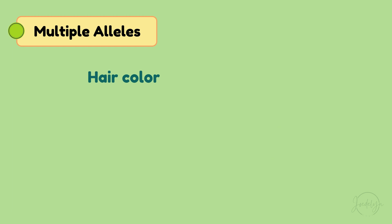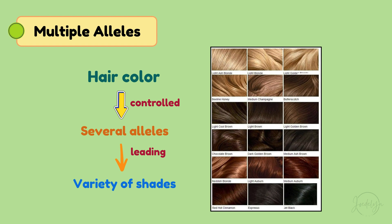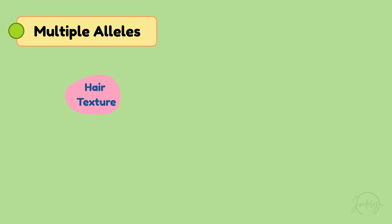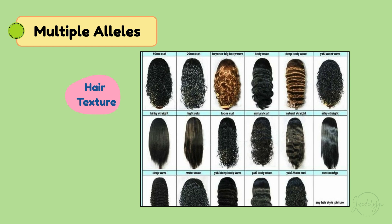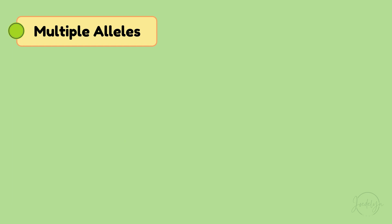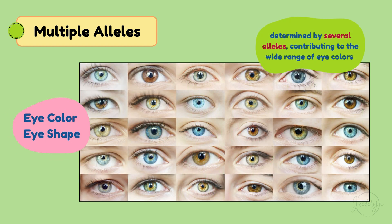For instance, hair color is controlled by several alleles, leading to a variety of shades from blonde to brown to black and even red. The texture of hair — whether it's straight, wavy, or curly — can also be influenced by multiple alleles interacting. Similarly, eye color and eye shape are determined by several alleles.